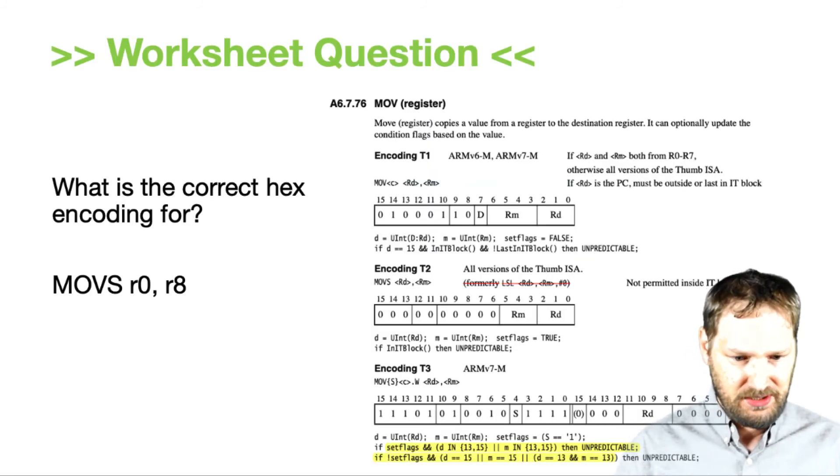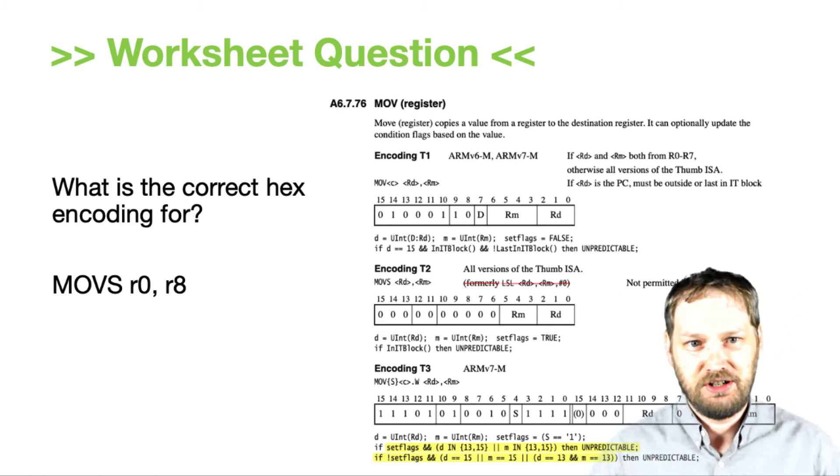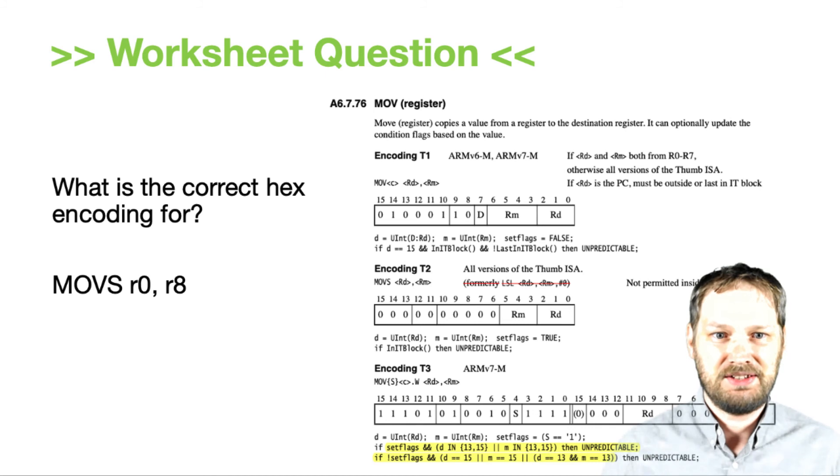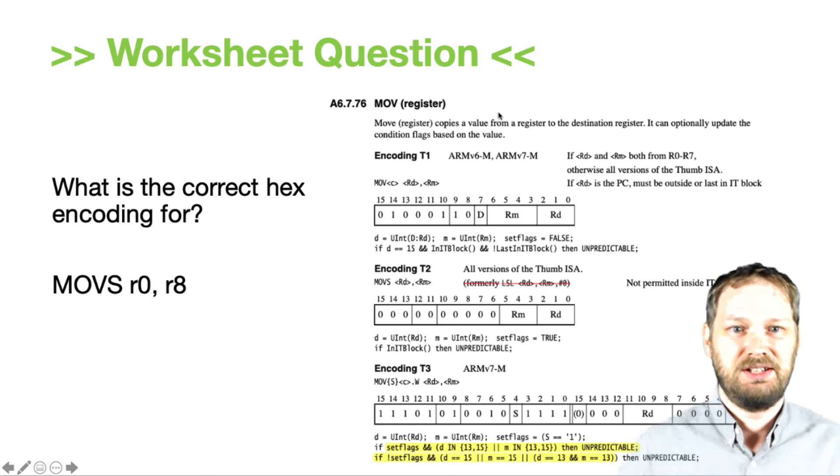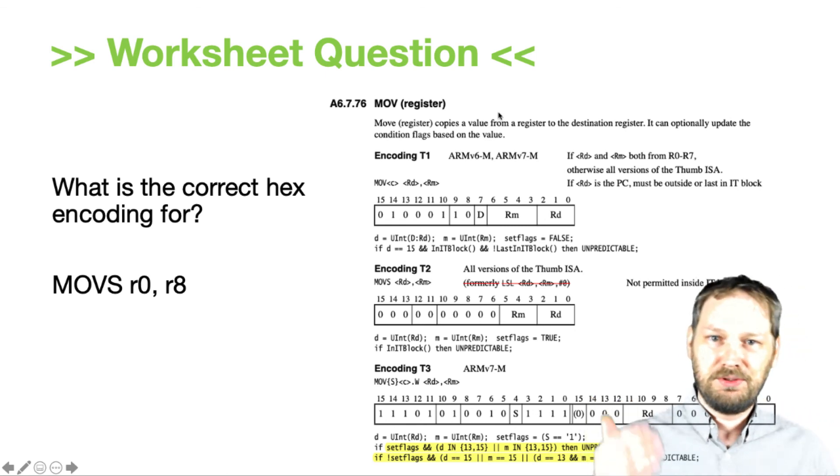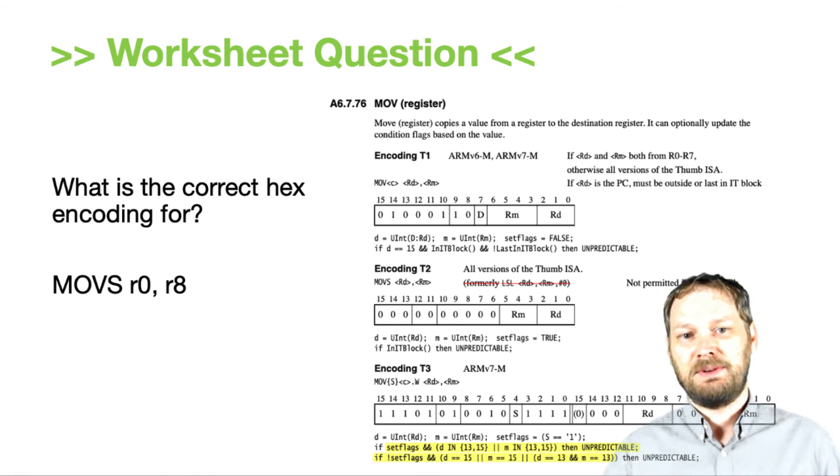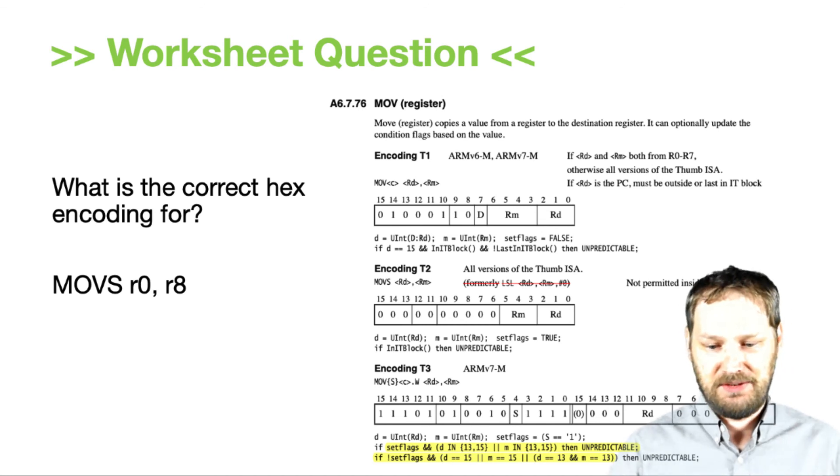All right. Moving on here. So we're going to give you a question for Gradescope. I want you to figure out what the correct encoding is for this command. This is move s r0 r8. So here's the entry for a move, and I want you to go through and figure out what the proper encoding is and report it in Gradescope in hex. You can pause the video, do that now.